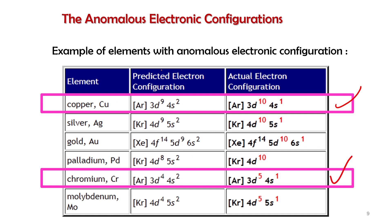Based on the Aufbau principle, we predict electrons fill into 4s first, then the remainder into 3d. However, the actual observed electronic configuration shows that one electron from 4s transfers to 3d. For copper, it becomes 3d¹⁰ 4s¹. Similarly for chromium, the predicted configuration has 4s² with the balance in 3d, but the actual observed configuration is 3d⁵ 4s¹.